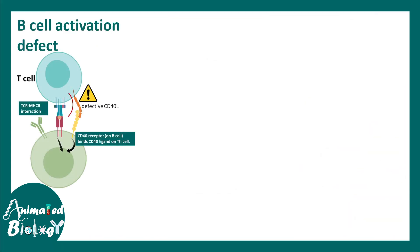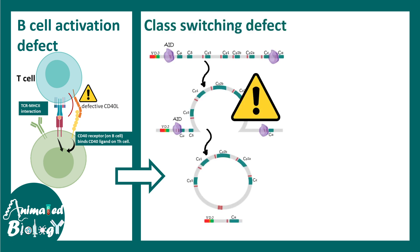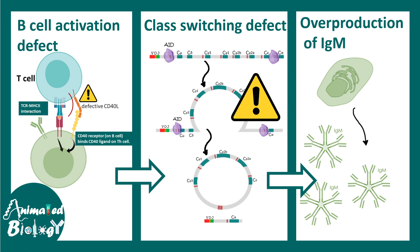This isotype switching is disrupted in Hyper IgM syndrome because there is a defective CD40 ligand. That's why B cell activation is not strong enough to evoke the class switching response. Once class switching does not happen, by default more and more IgM is produced, and that is why the patient's serum has over-representation of IgM antibodies.